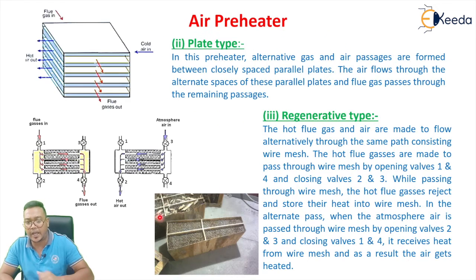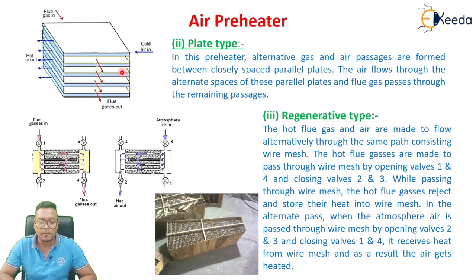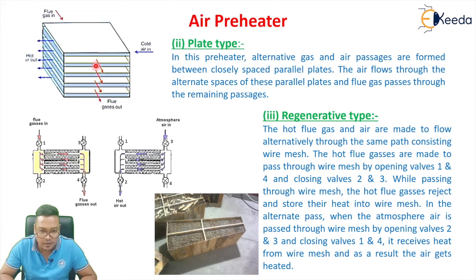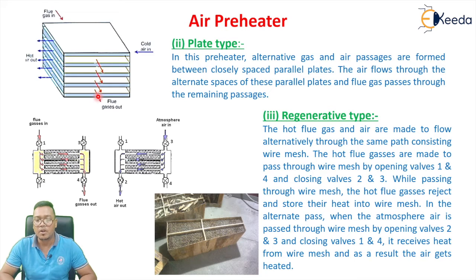In the plate type air preheater, flue gas flows alternately through certain plate passages while air flows through the adjacent passages between the plates. The flue gas and air flow through alternate passages, so that the flue gas transfers its heat to the cold air through the plates.